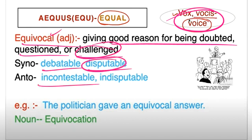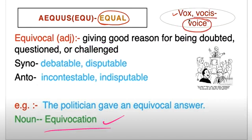Antonyms: incontestable, indisputable. Example: The politician gave an equivocal answer. The noun form is equivocation.